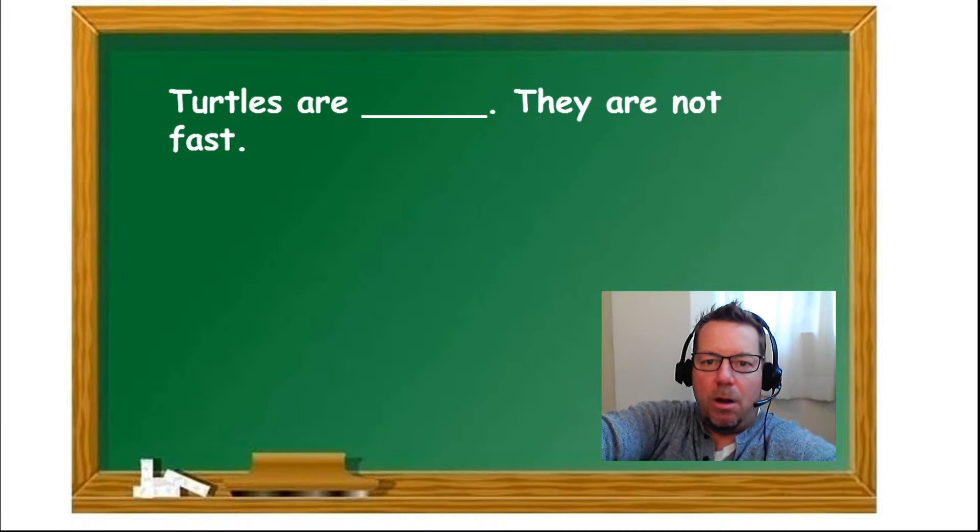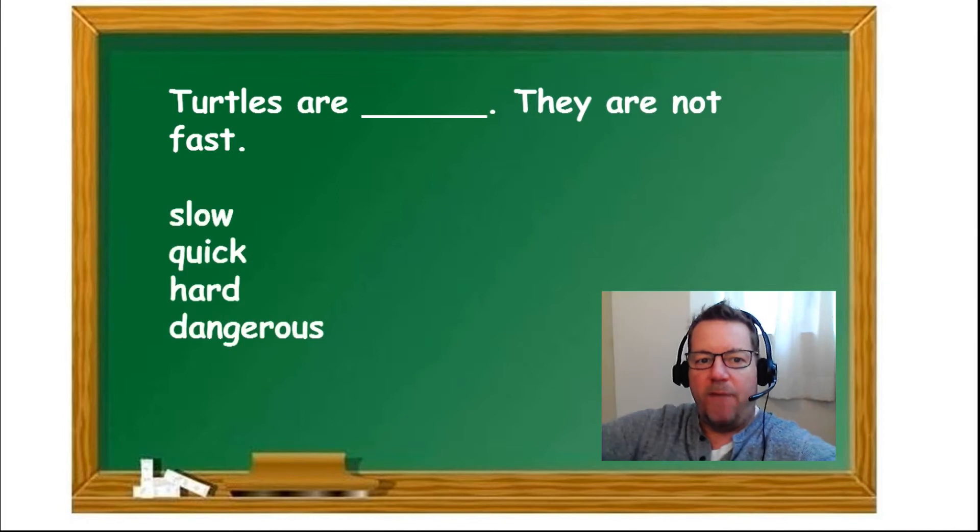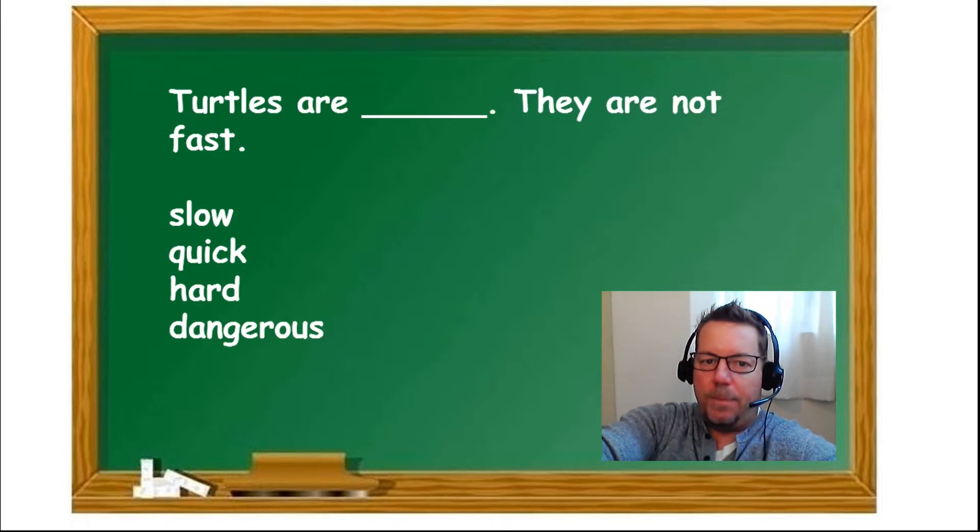Turtles are blank. They are not fast. So we're looking for the opposite of fast. Turtles are very slow, quick, hard, or dangerous? Dangerous turtles. Look out. Be careful of the dangerous turtles. What's the opposite of fast? Easy one. Turtles are slow. They're not very fast.